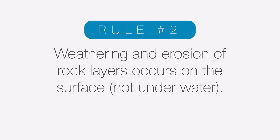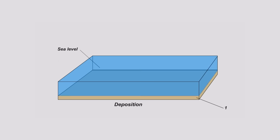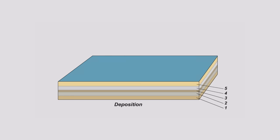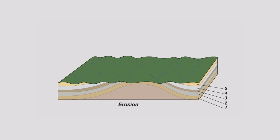Rule number two: if rocks are weathered and eroded, then they must have been, at least for a period of time, out of the water. This is because weathering and erosion of rock layers mainly happens on the surface of the Earth, not underwater. Sediments are deposited and compressed into sedimentary rocks, and then some event — in this case folding — causes the layers to be uplifted out of the water, where wind, rain, snow, and ice wear them away. The layers tend to form underwater; the weathering and erosion happens above the water.